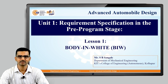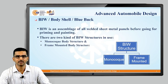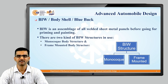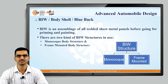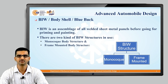So, what is Body in White? Basically, this is an assemblage of all welded sheet metal panels before going for priming and painting. This is the frame. For each and every vehicle there has to be one structural frame, and around that particular frame we are going to attach various body panels, connect the IC engines, transmission systems, and suspensions. This frame acts as the main structure, and one of the most important functions is to transfer the loads.